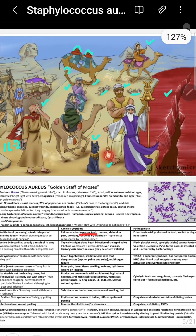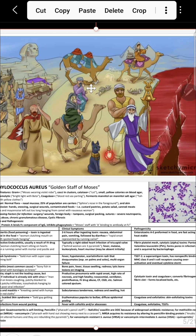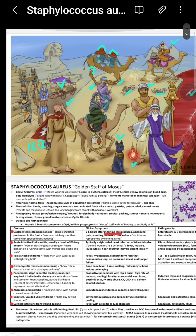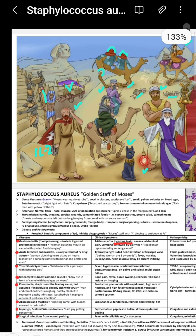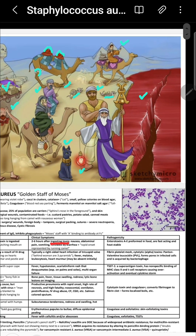In the picture, the caravan symbolizes vancomycin, the pencil symbolizes nafcillin, the pharaoh symbolizes MRSA, and the nose shows that Staph aureus colonizes in the nose. The letter 'A' indicates protein A, the main virulence factor, which attaches to the Fc portion of the IgG antibody.